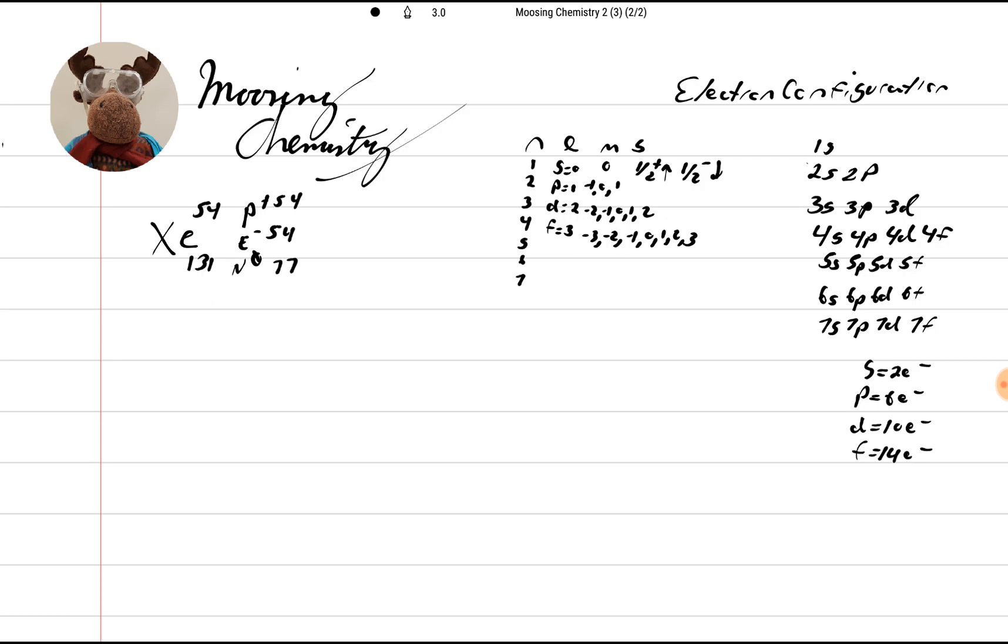Okay, so let's go ahead and do this. Remember our S has two electrons, our P can hold 6, D can hold 10, and F can hold 14. So we're going to do our electron configuration first. So we start with the diagonal rule.